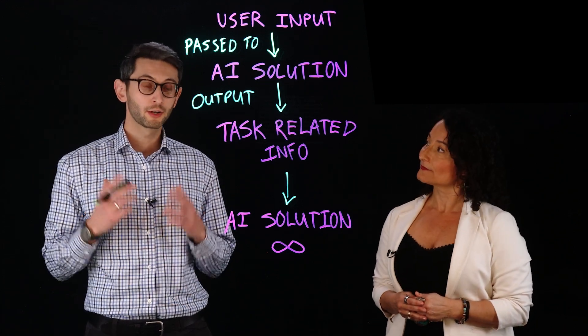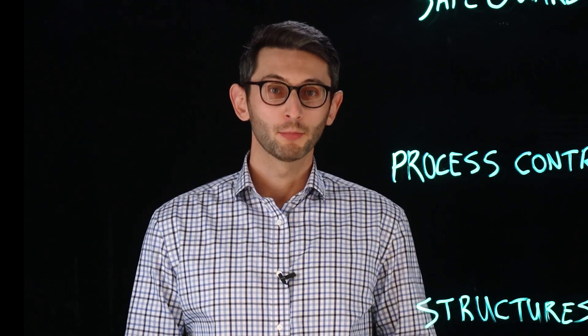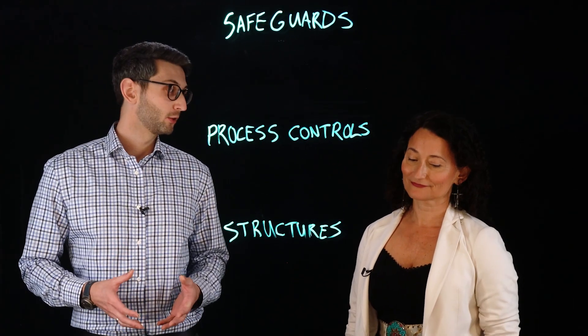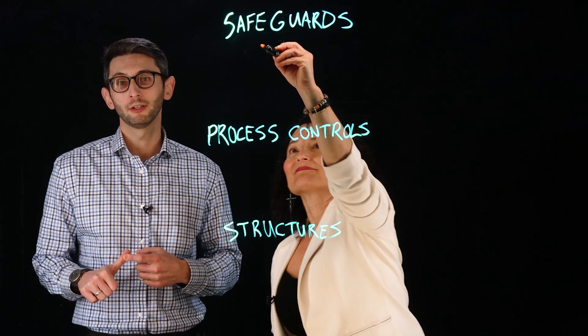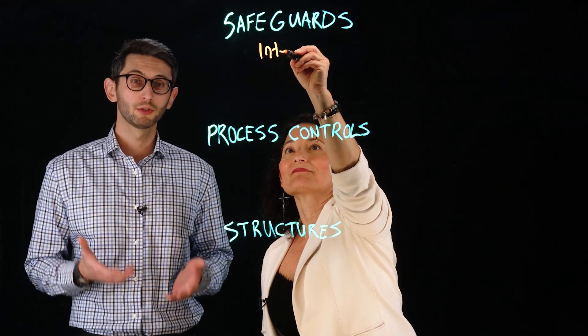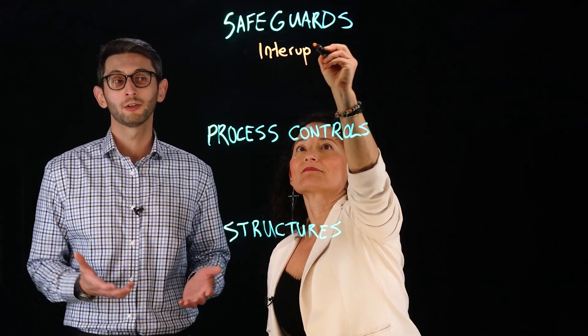Now, let's talk about how we actually govern this technology. Effective governance for agentic AI requires a multi-layered approach covering technical safeguards, guardrails like interruptibility.